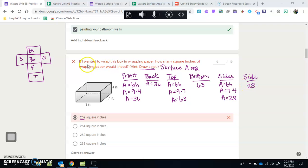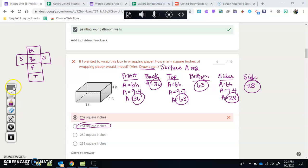Now that we have the area for each face, we need to add up 36 plus 36 plus 63 plus 63 plus 28 plus 28. When we add it all up, you should get 254 square inches.